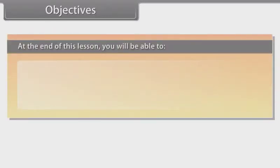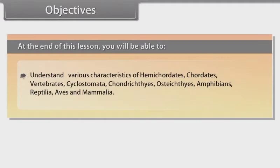Objectives: At the end of this lesson, you will be able to understand various characteristics of Hemichordates, Caudates, Vertebrates, Cyclostomata, Chondrichthyes, Osteichthyes, Amphibians, Reptilia, Aves and Mammalia.